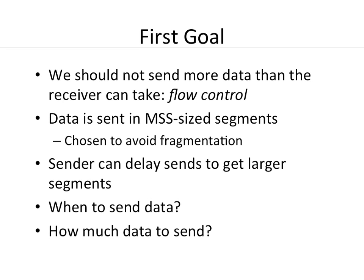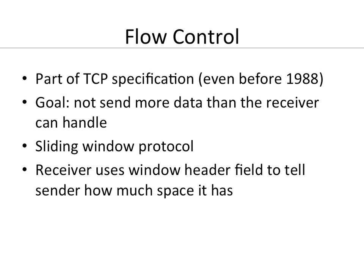The idea that helps transport protocols send the right amount of data is called flow control. The basic question is how much data should TCP send at a given time, and when to send it? Flow control has been part of TCP specification almost from the beginning. The goal is to send just the right amount — not too much, because that could cause problems in the network. We use a sliding window protocol: there's a notion of receiver window that tells the sender the amount of data it is willing and able to accept.